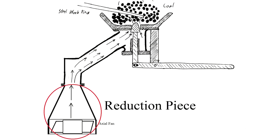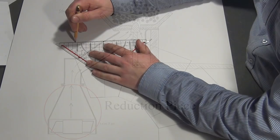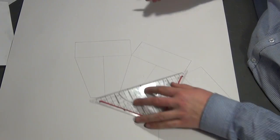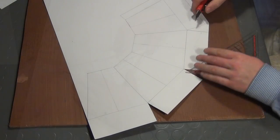The next issue was to build a reduction piece to mount the 120mm fan on the 60mm flange of the steel middle section. For that I first built a model for such a reduction piece from cardboard. After drawing it on paper I cut it out and glued it together.